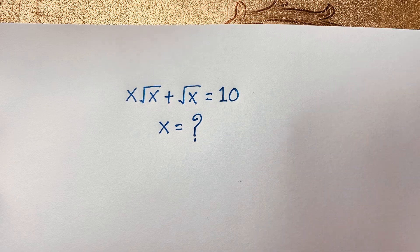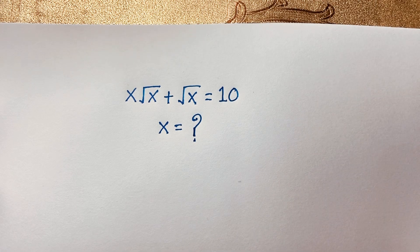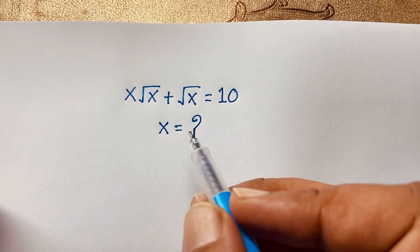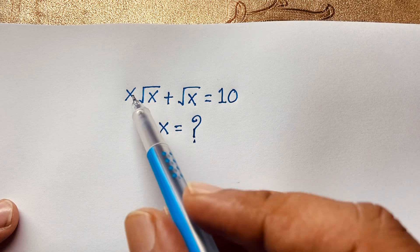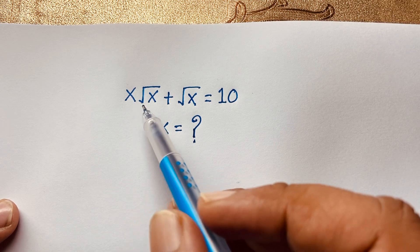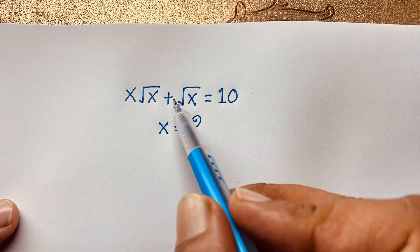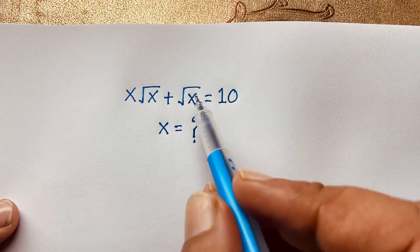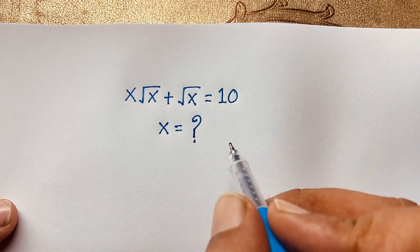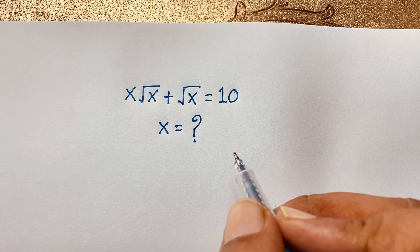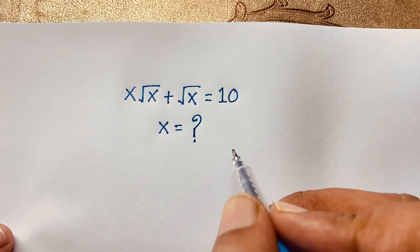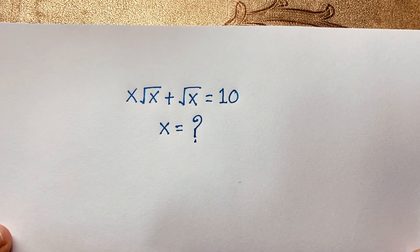Hello everyone, welcome to Ross's Classroom. Today we are solving a nice math problem: x times square root x, plus square root x, is equal to 10. What is x? How to solve this interesting math question.